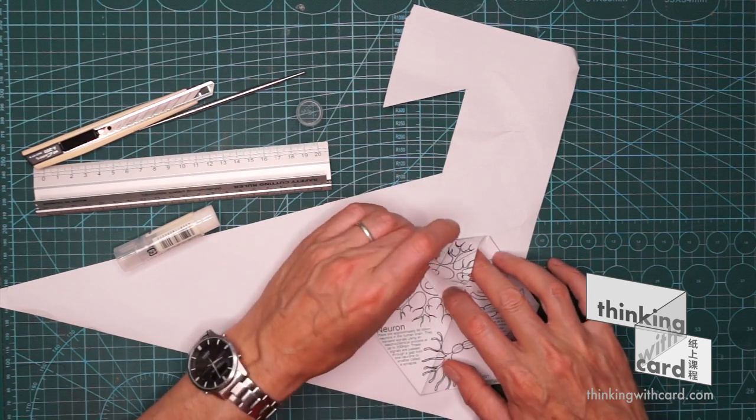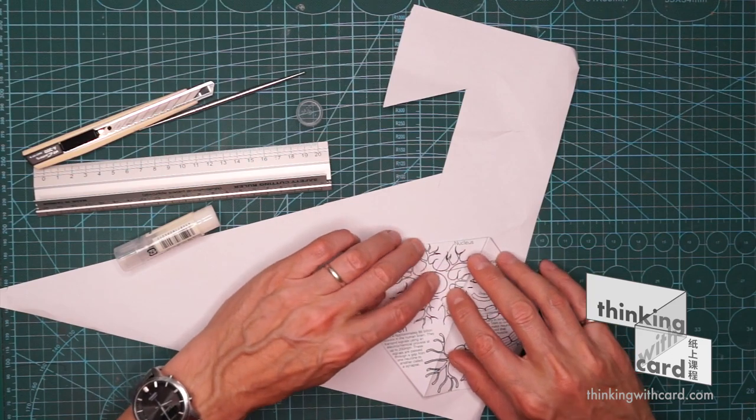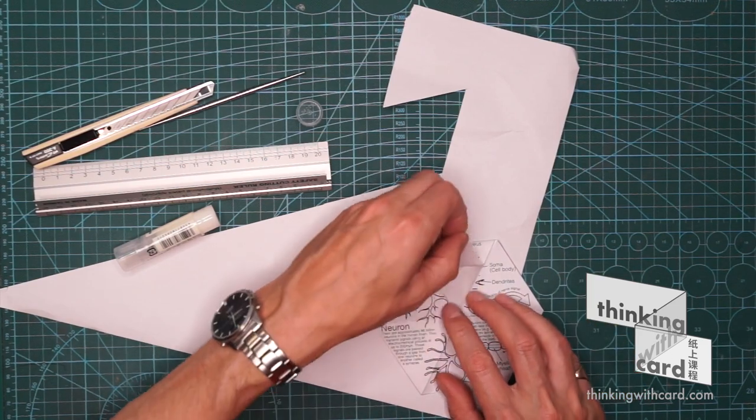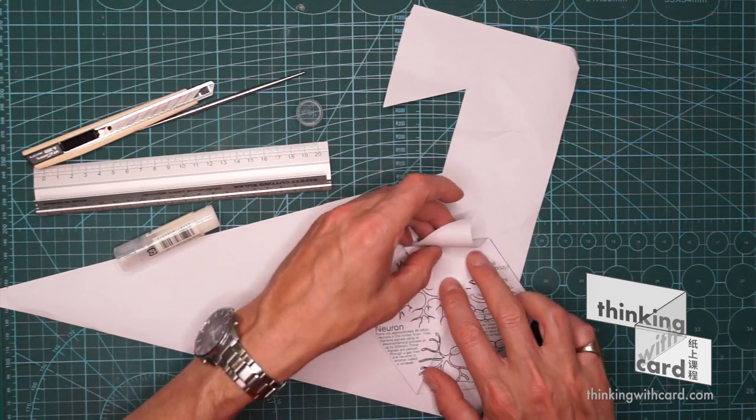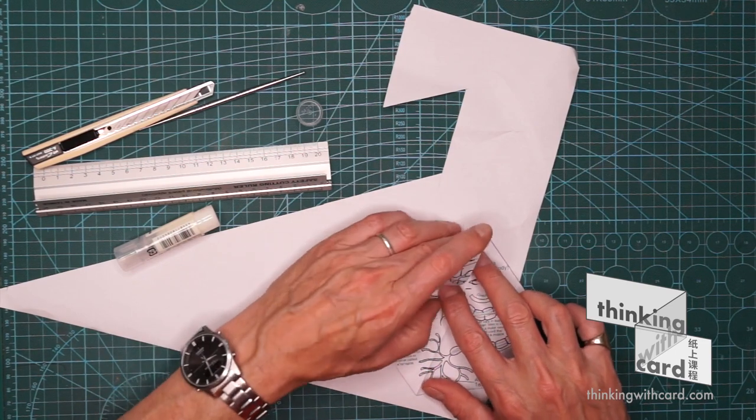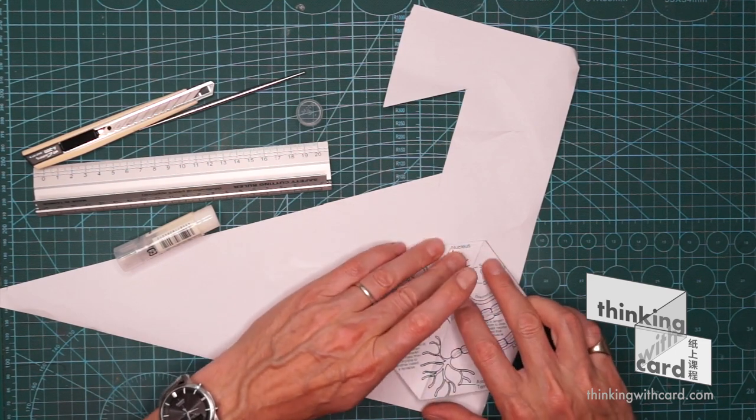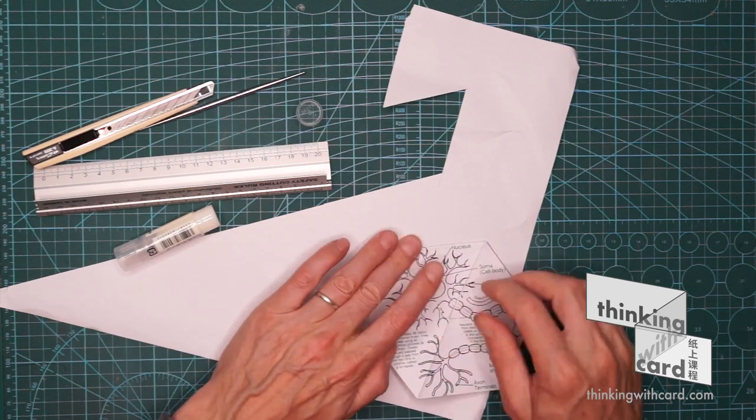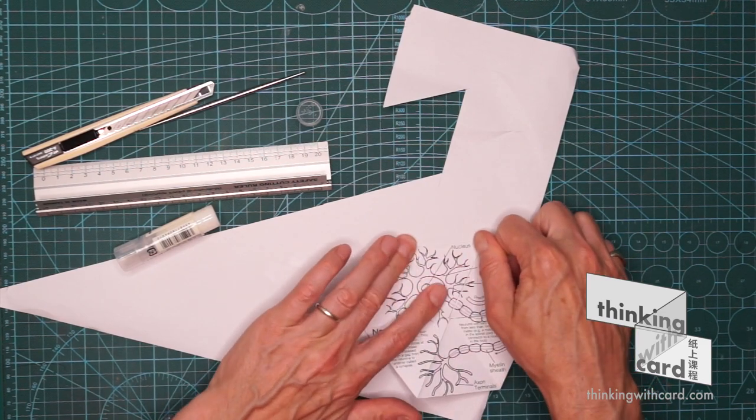As carefully as possible. So again, we just want the triangles to sit as near exactly on top as possible. There. That's the first one done.